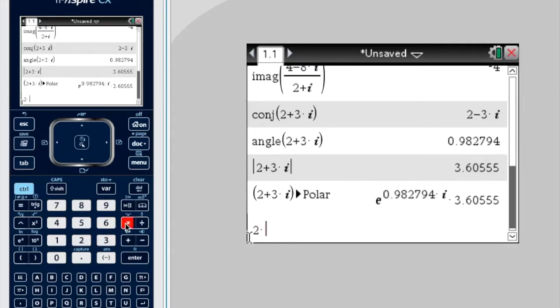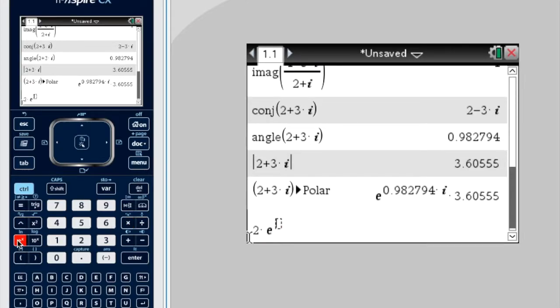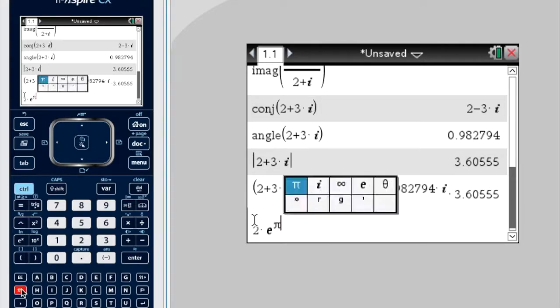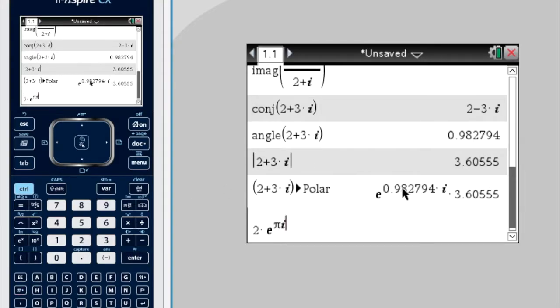I'd press 2 times e to the pi times, and I have to put i as well. Okay, can you see that I've got the angle and then times i?